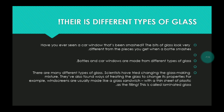There are different types of glass. Have you ever seen a car window that's been smashed? The bits of glass look very different from the pieces you get when a bottle smashes. Bottles and car windows are made from different types of glass. Scientists have tried changing the glass-making mixtures and found ways of treating glass to change its properties. For example, windscreens are usually made like a glass sandwich with a thin sheet of plastic as the filling — this is called laminated glass.